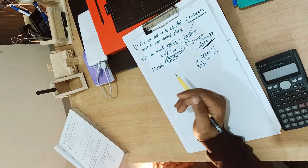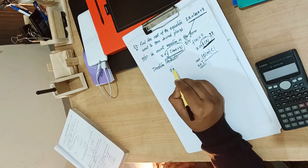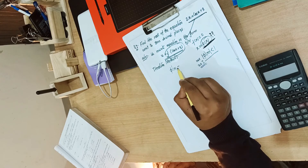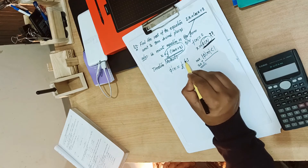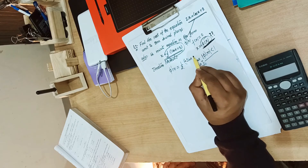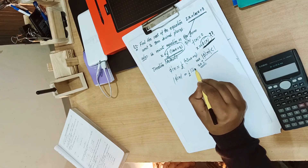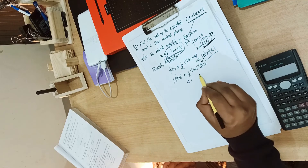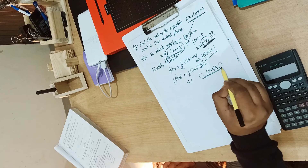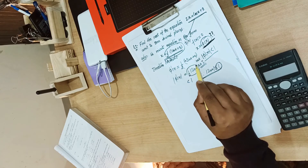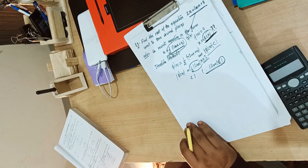Now we check whether |phi'(x)| < 1. The first derivative of phi(x) = (1/2)(cos x + 3) is (1/2)(−sin x), since the derivative of cos x is −sin x and the derivative of the constant 3 is 0. So |phi'(x)| = (1/2)|sin x|. Since |sin x| ≤ 1 always, and it is divided by 2, this value will always remain less than 1 for all x on the real line.